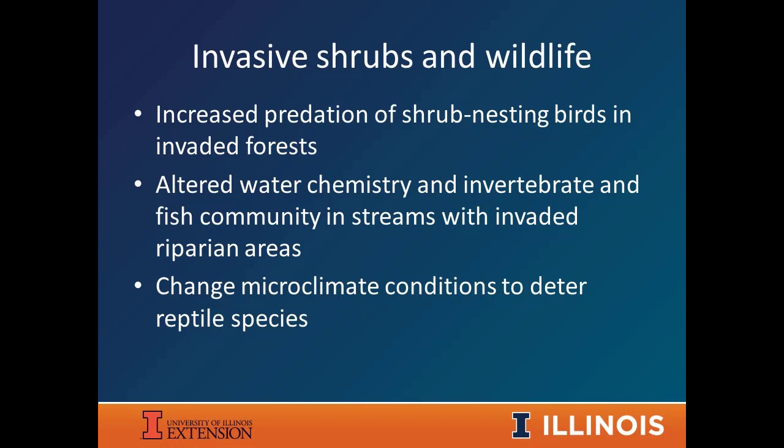Not only do these shrubs impact our trees, but we're finding more and more impacts to wildlife as well. One example is increased nest predation on shrub-nesting birds because they nest in these shrubs and are more vulnerable to rat snakes or raccoons. There are also weird effects like altered water chemistry that changes invertebrates and fish communities in streams, and changes in microclimate conditions that deter reptile use and other wildlife.